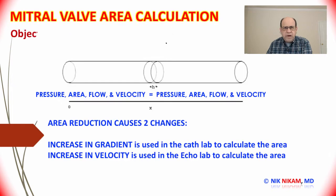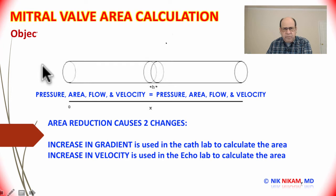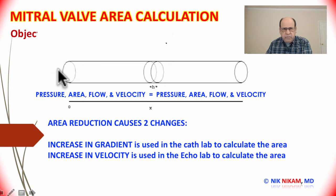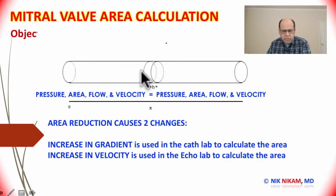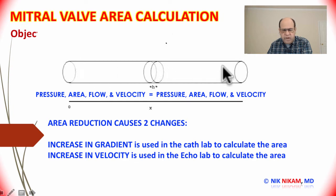So let us begin with a little bit about hydraulics. When a water pipe is connected to a hose and the hose is opened, based on the pressure generated in the water system, the water is pushed, creating flow. The flow of water is based on the area of the pipe and the velocity at which it comes through the faucet. As long as the area, pressure, and velocity are maintained constant, the flow in the water pipe will be constant.